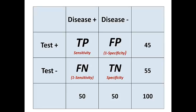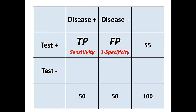Going back to our 2x2 table and looking at the top row, sensitivity is actually the rate of true positives, and 1 minus specificity is actually the rate of false positives. The ratio of the column percentages of those two yields the positive likelihood ratio. This may seem confusing when you read about it in the literature, but in reality it's a fairly simple concept.